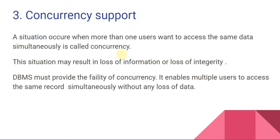The third function is concurrency support. A situation that occurs when more than one user wants to access the same data simultaneously is called concurrency. This situation may result in the loss of information or loss of integrity. DBMS must provide concurrency support — it enables multiple users to access the same record simultaneously without any loss of data. Thousands or millions of users can access the same data, so concurrency support ensures there is no loss of data or any kind of interruption.